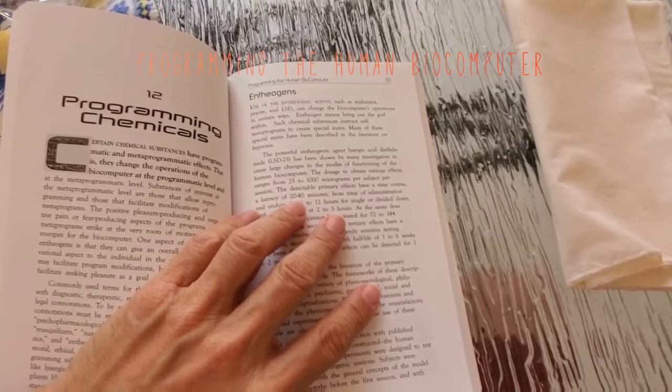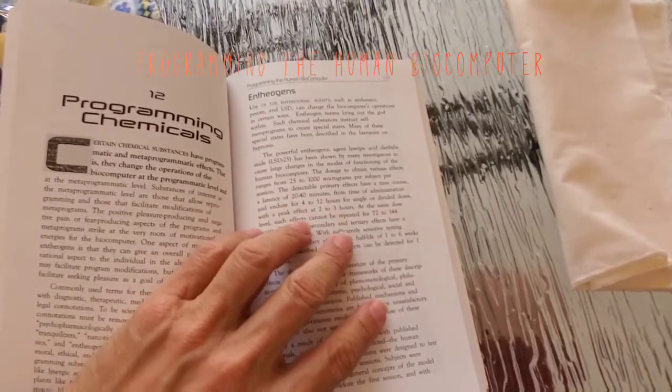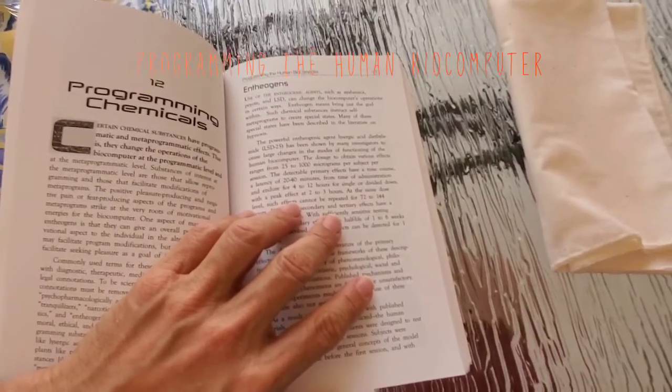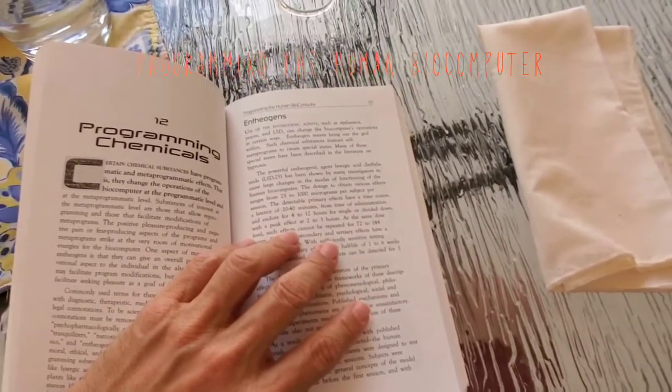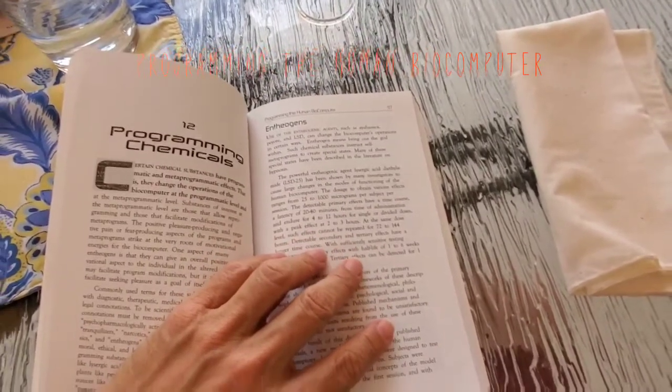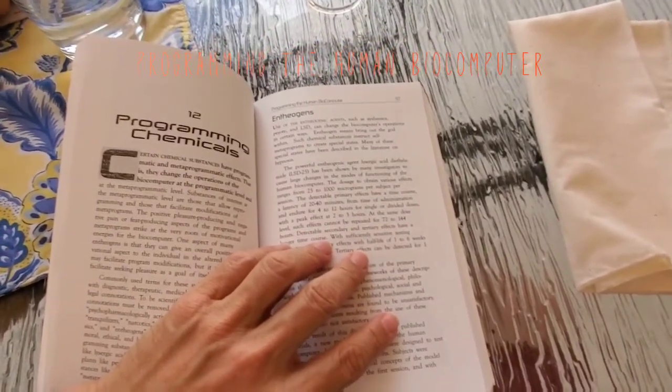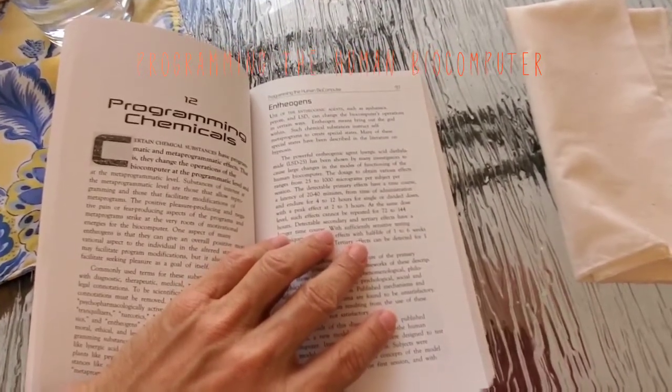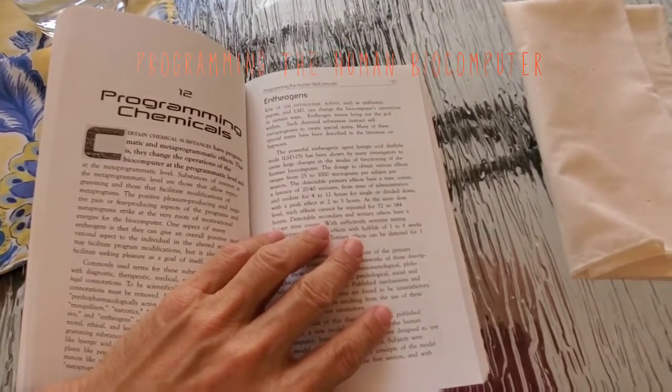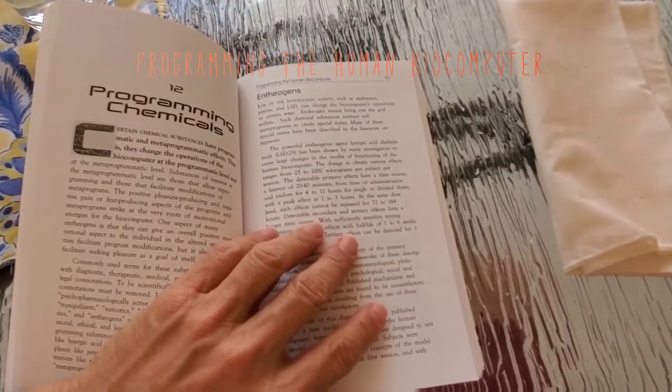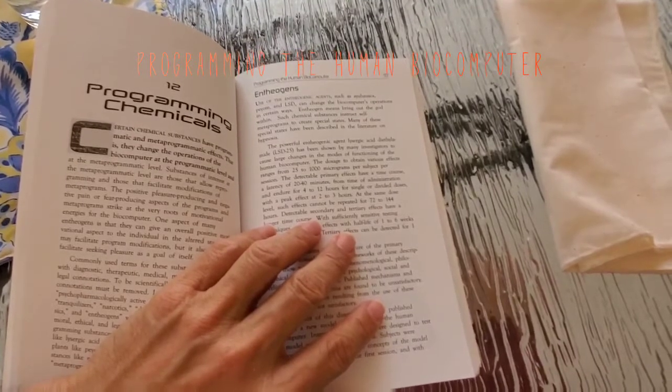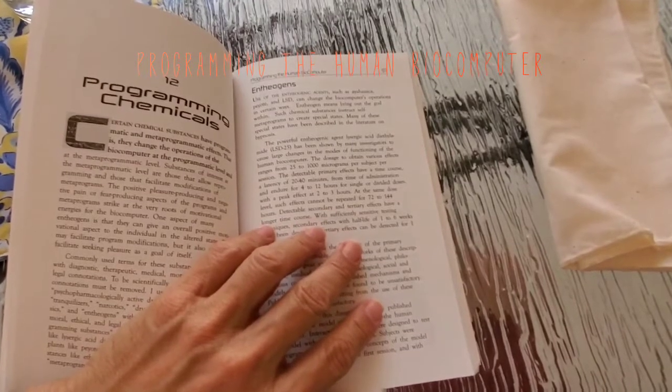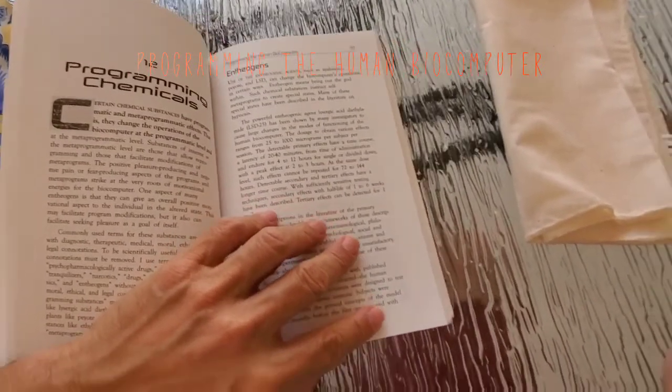The detectable primary effects has a time course, a latency of 20 to 40 minutes from time of administration and endure for 4 to 12 hours for single or divided doses, with a peak effect at 2 to 3 hours. At the same dose level, such effects cannot be repeated for 72 to 144 hours. Detectable secondary and tertiary effects have a longer time course.